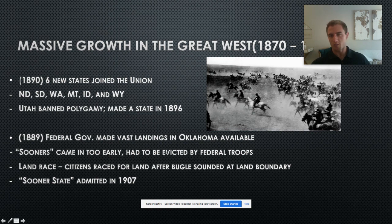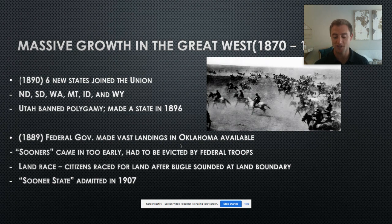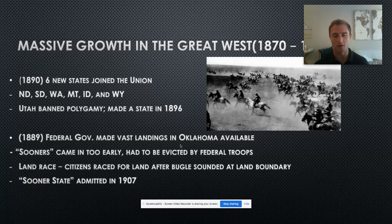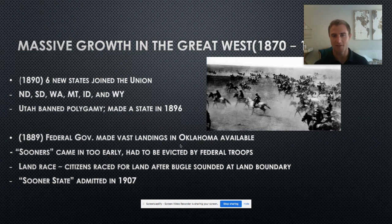Oklahoma had been called Indian Territory all the way back to 1830 with the Indian Removal Act, where Native Americans were moved west of the Mississippi into Indian Territory. But because of the Dawes Severalty Act, this land was now available for settlers. There was a land race — horses lining up and racing throughout the plains of Oklahoma to claim available land. Some people cheated and came in a little too early; those people were called the Sooners. Thus Oklahoma became called the Sooner State and was admitted in 1907.